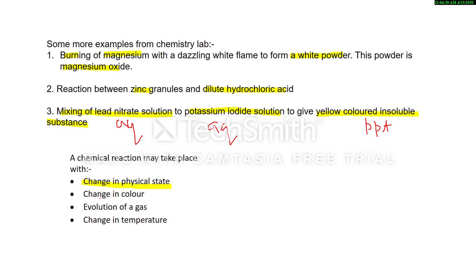Another change is a change in color — we get a yellow-colored compound, lead iodide. There is also evolution of gas: in the second reaction, when zinc reacts with hydrochloric acid, hydrogen gas is produced. So that reaction is characterized by the production of a gas.